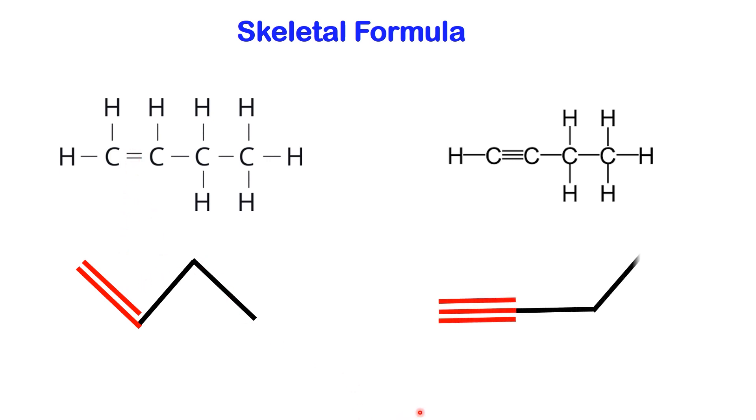The same principle applies for a molecule containing a triple bond. However, in this case, the triple bond is represented as a straight line, not a zigzag. This is the appropriate way to depict a triple bond in a skeletal formula.